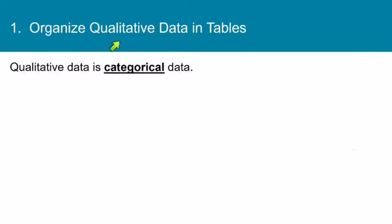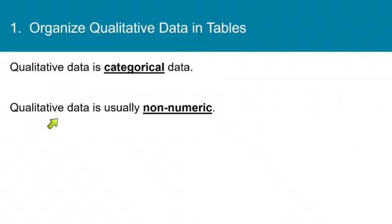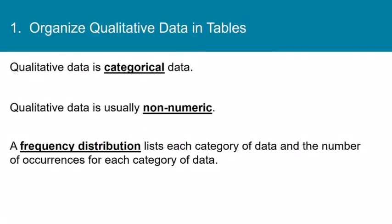Now we said we're organizing qualitative data in this section, and remember qualitative data is categorical data. Qualitative data is usually non-numeric, although it is possible for numeric data to be qualitative, such as zip codes and phone numbers. The way we organize this data is we make a frequency distribution, or a frequency table, and the way we'll do it is we'll list each category of data, and then we'll tally the number of occurrences for each category of data.